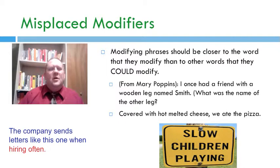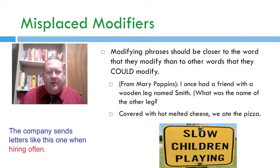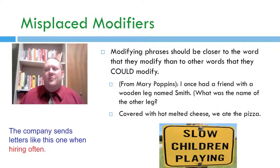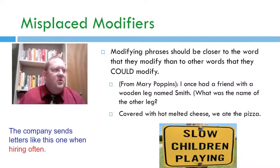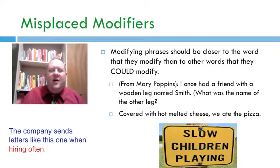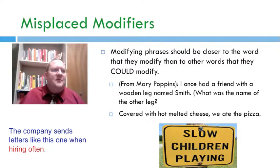Sometimes the modifying phrase is modifying something that is in the sentence, but isn't in the right place. There are other nouns closer to the modifying phrase that could be modified grammatically by the phrase. This is called a misplaced modifier. You've probably seen a sign like 'slow children playing,' chuckled to yourself, and wondered where the fast children are, because the modifier 'slow' can modify 'children' or it can modify what you should do — go slow because there are children playing. In the sample sentence, 'the company sends letters like this one when hiring often,' the word 'often' needs to be closer to 'sends' because that's what it's modifying: 'the company often sends letters like this one.'